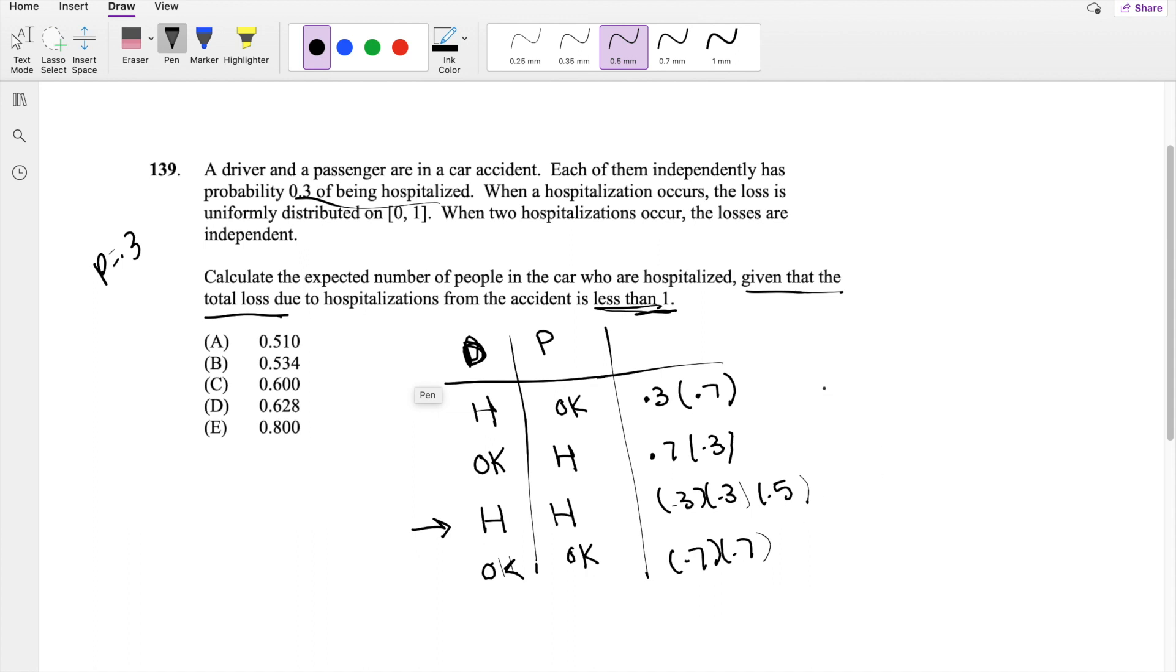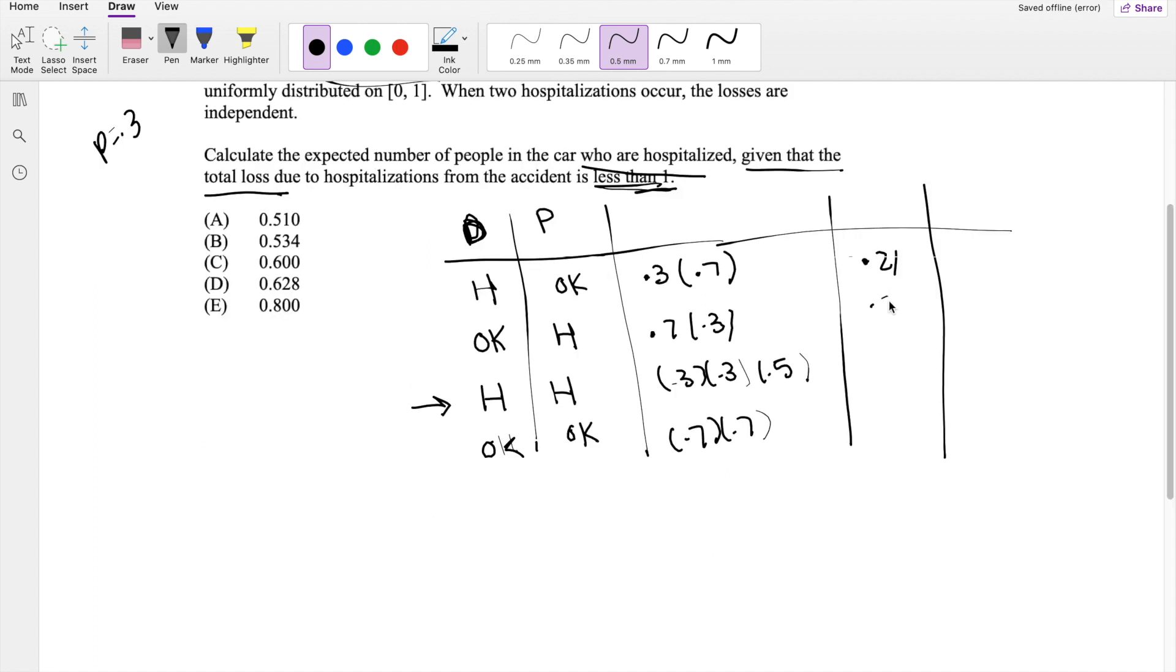So then this is equal to 0.21, 0.21, 0.045, and 0.49. Adding all these probabilities up together, since we're looking for the conditional probability, 0.955.